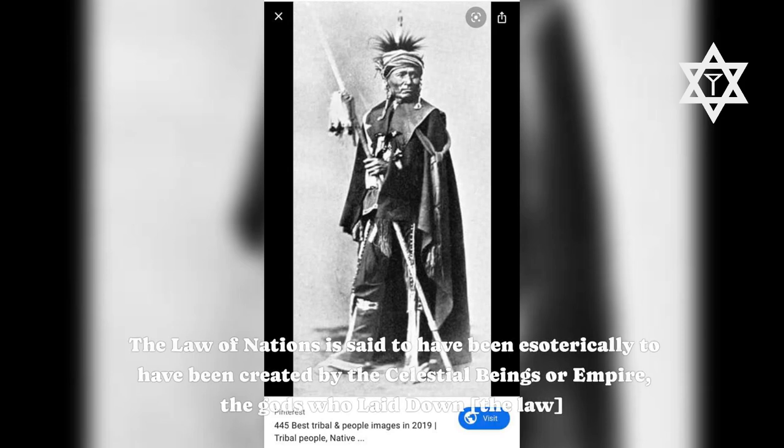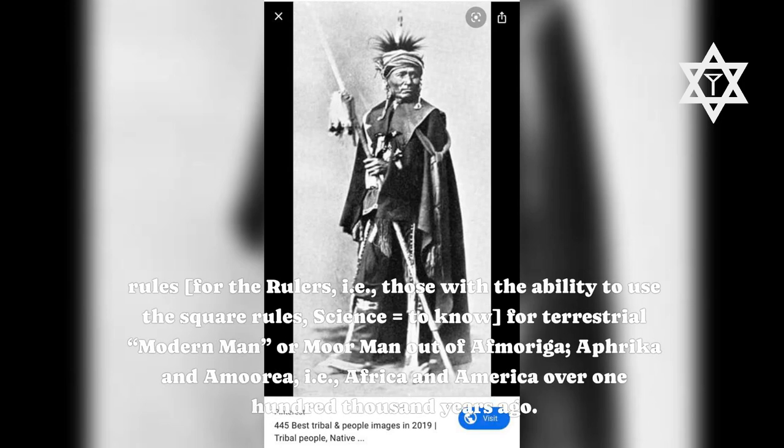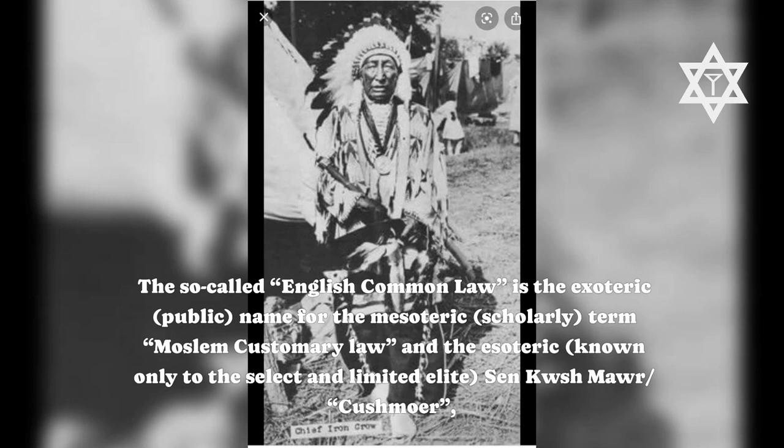The law of nations is said esoterically to have been created by the celestial beings or empire — the gods who laid down the law rules for the rulers, i.e., those with the ability to use the square rules: science equals to know — for terrestrial modern man, or more man, out of Afmoriga — Africa and Amoria, i.e., Africa and America — over 100,000 years ago. The so-called English common law is the exoteric public name for the mesoteric scholarly term Muslim customary law.